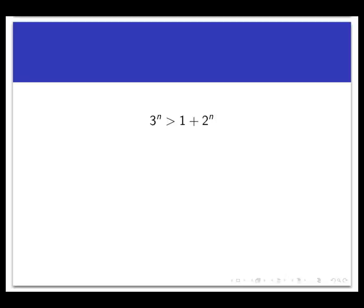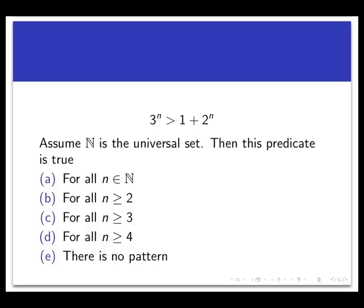Let's try some natural number values of n on the left-hand side and the right-hand side. I'm going to give this to you as a concept check. Assume that the universal set is the set of all natural numbers. Play around with some natural number values of n, put them in, and fill in the blank: for what values of n is 3^n bigger than 1 + 2^n? Once you think you have the answer, come back from the paused video.